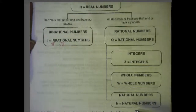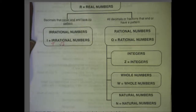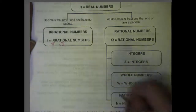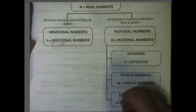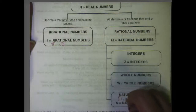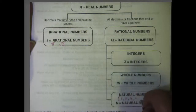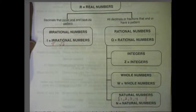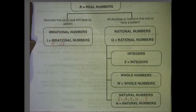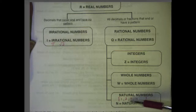Let's start down at the bottom with natural numbers. Natural numbers are the numbers the way you learn them when you were little, when you first learned to count. They start with 1: 1, 2, 3, 4, and on and on. So no fractions, no decimals — unless they were to simplify to one of these numbers — and no negatives.